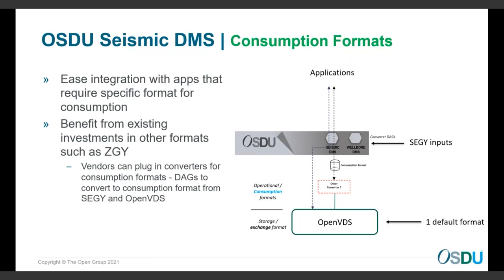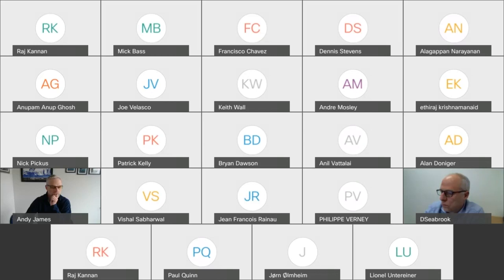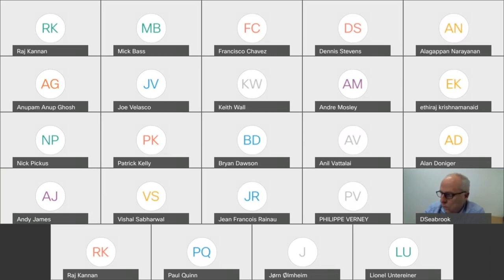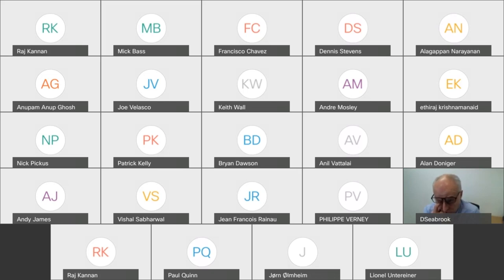Quick time check — if there are any last questions we can take them, then let's move to the second topic of the day which is really around common code assurance. The last question for this session: it sounds like what we're doing is enabling you to ingest any format and it normalizes to open VDS for storage. My question is: what happens to the original data? Are we intending to save that as well — for example, do we save the SEG-Y as well as the open VDS, or is the expectation that we just do the conversion, or is it solely up to the converter to make that decision?